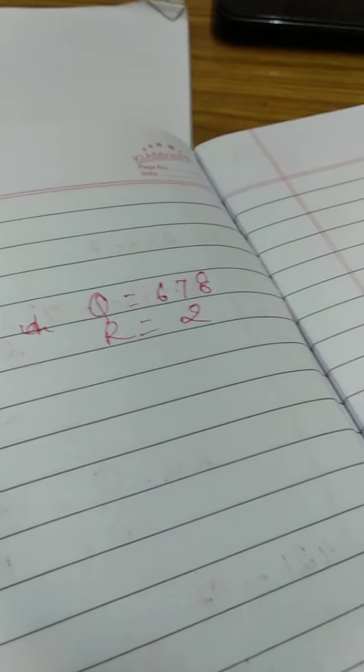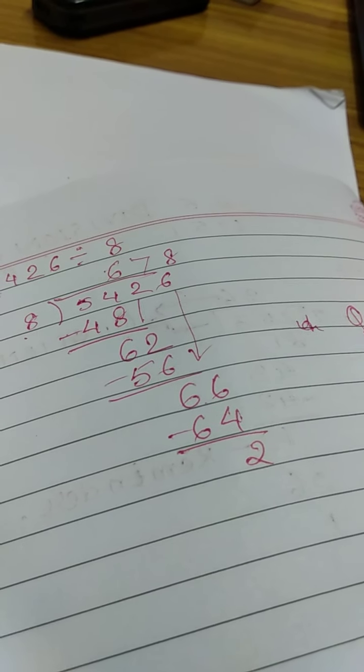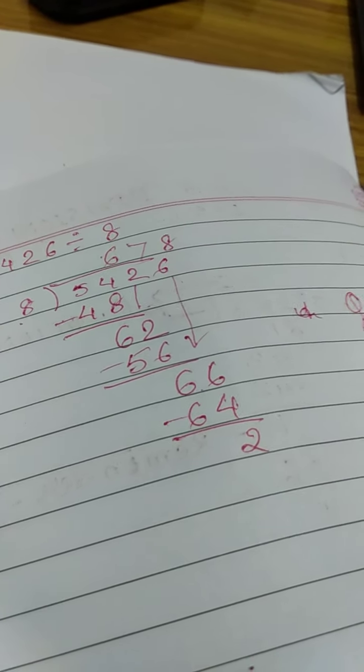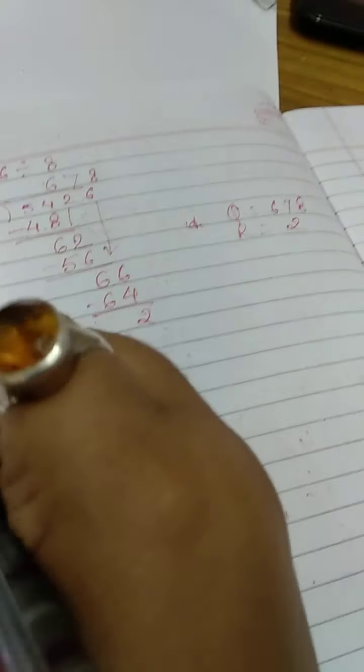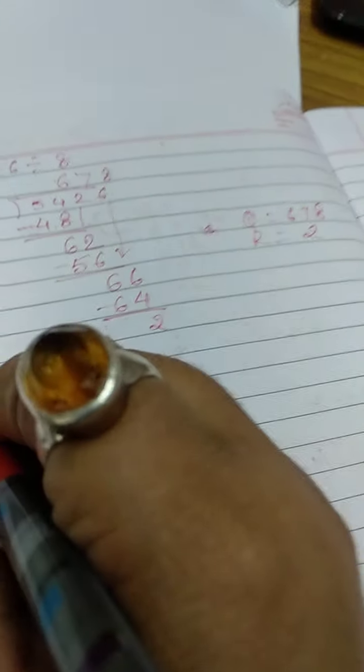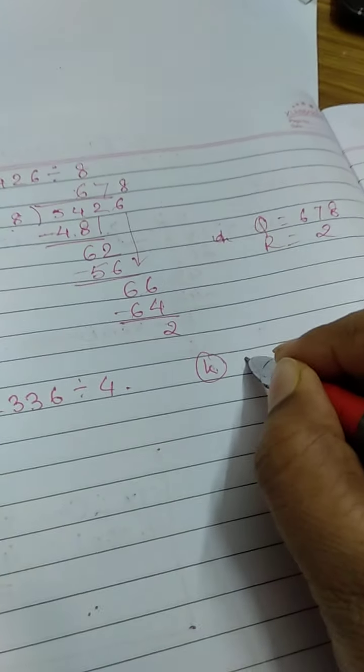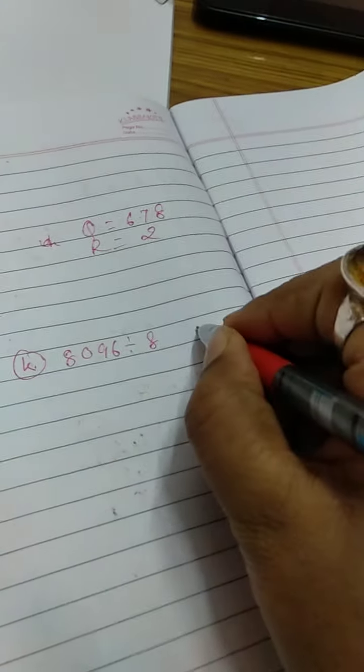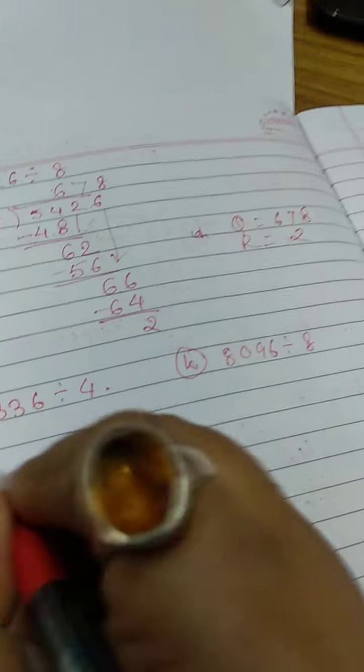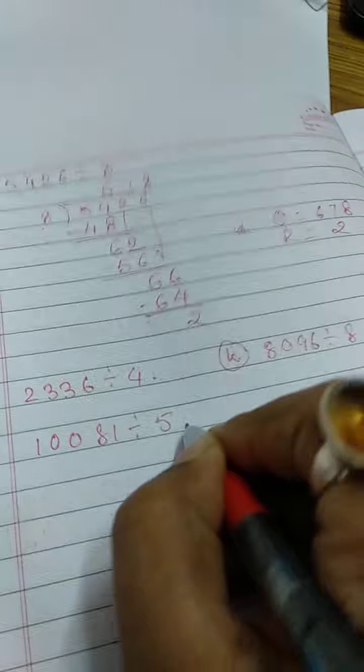I think it is okay for you to understand. For your homework, you will practice these sums. Do it in a maths copy. Problem K: 2336 divided by 4. Problem L: 8096 divided by 8. And then problem M: 10081 divided by 5.